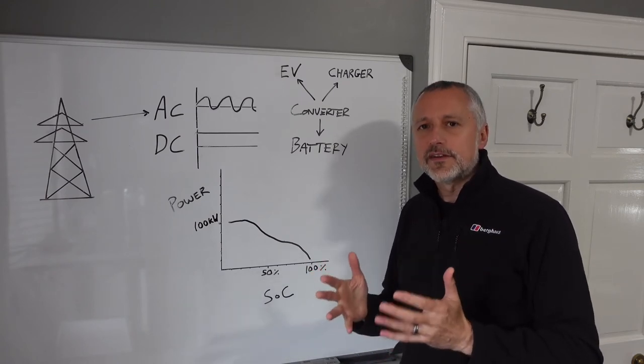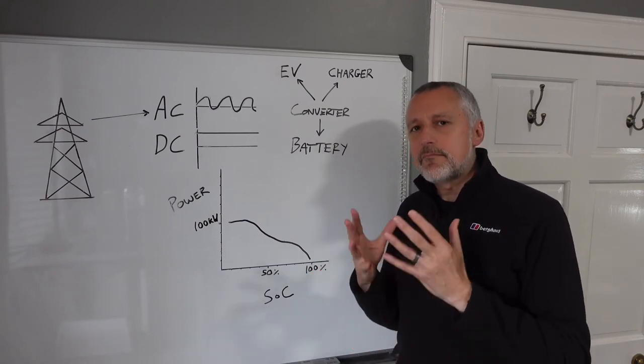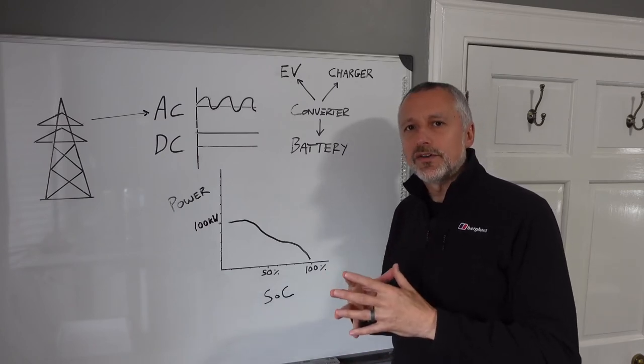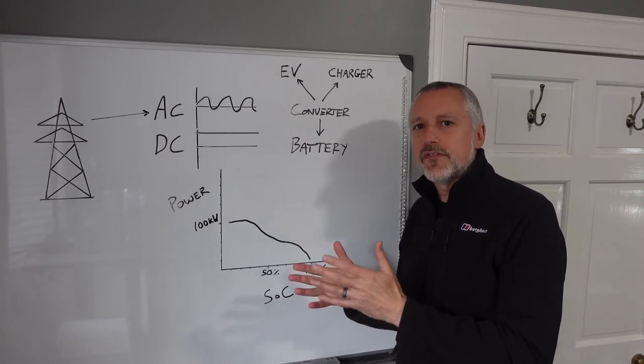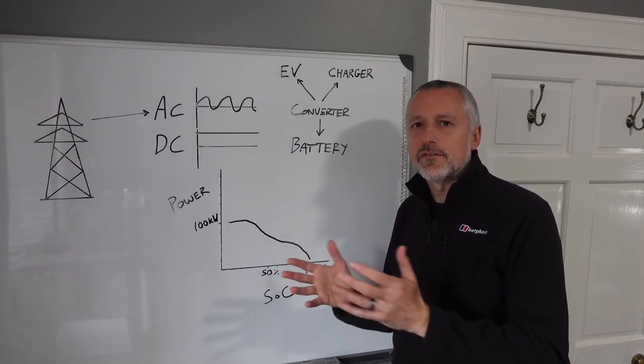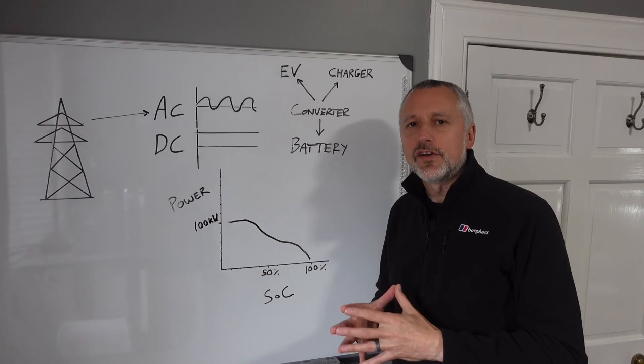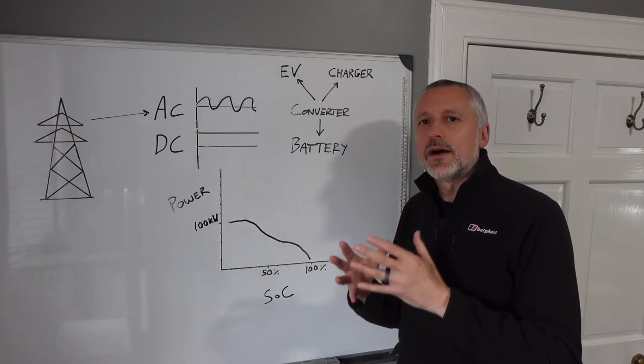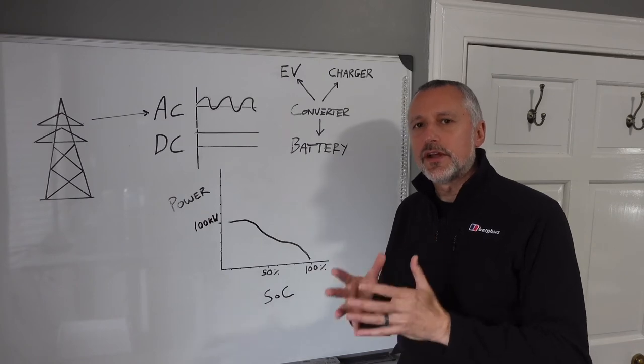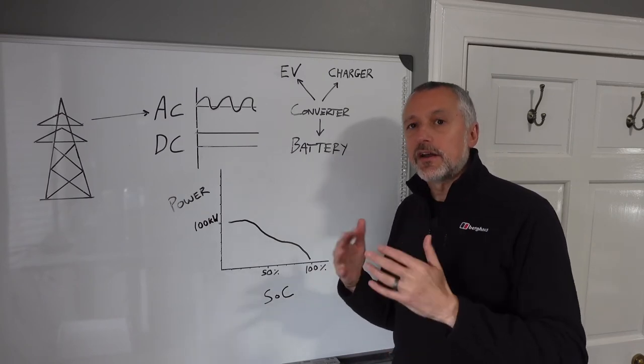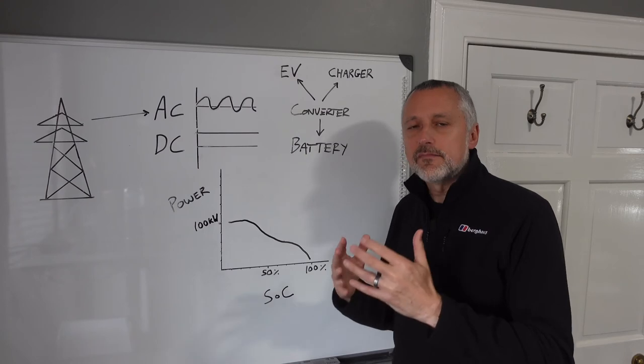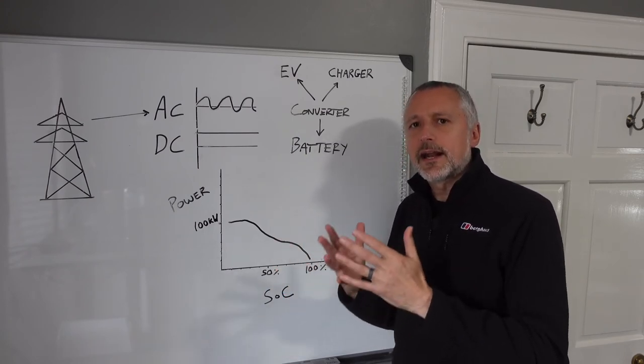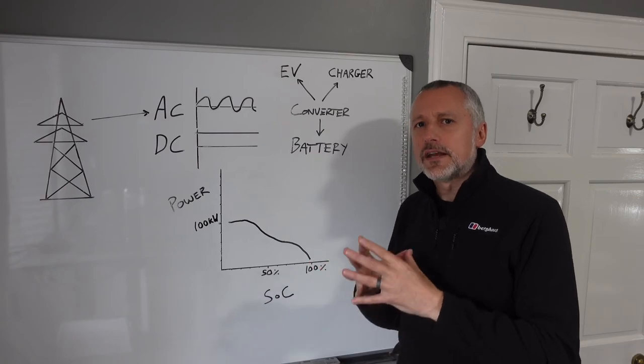For example, I have the Jaguar I-PACE and that has a maximum speed it can take of 104 kilowatts. So it doesn't matter if I turn up to a 350 ionity charger, 350 kilowatts for example, I'm still only going to get a maximum of 104 kilowatts. You may have a car that can only take up to 50 kilowatts, so again it doesn't matter if you turn up to 150 kilowatt charger, you're still only getting at that maximum 50 kilowatts.